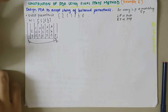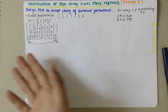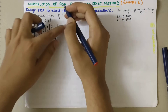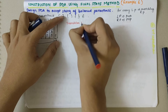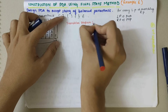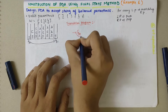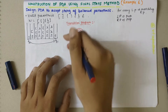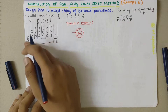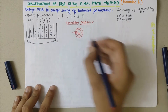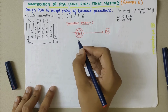The stack becomes empty, so the state changes from Q0 to Q1. These are the moves made on the stack. Now Q0 is the start state and also the final state because the loop keeps recurring. Q1 is the intermediate state.